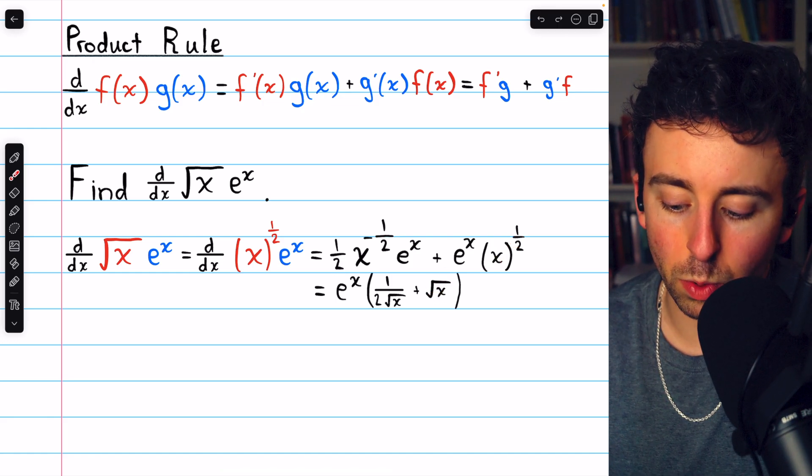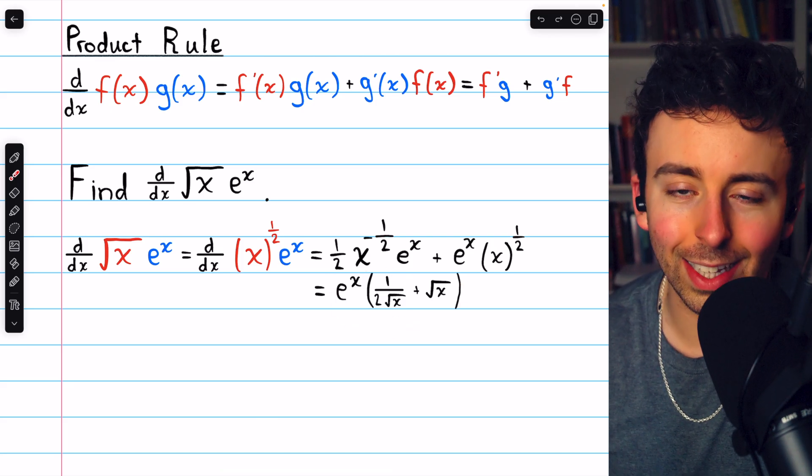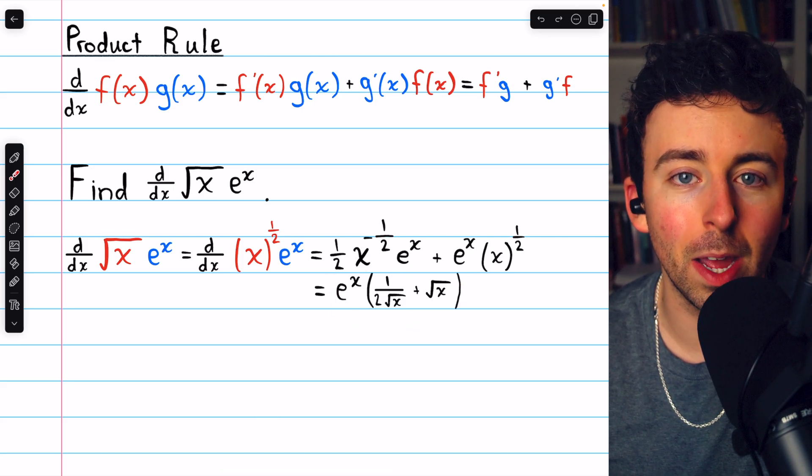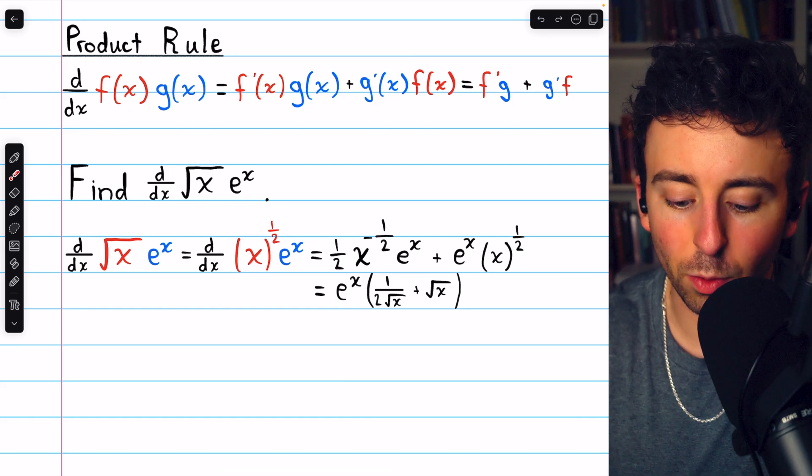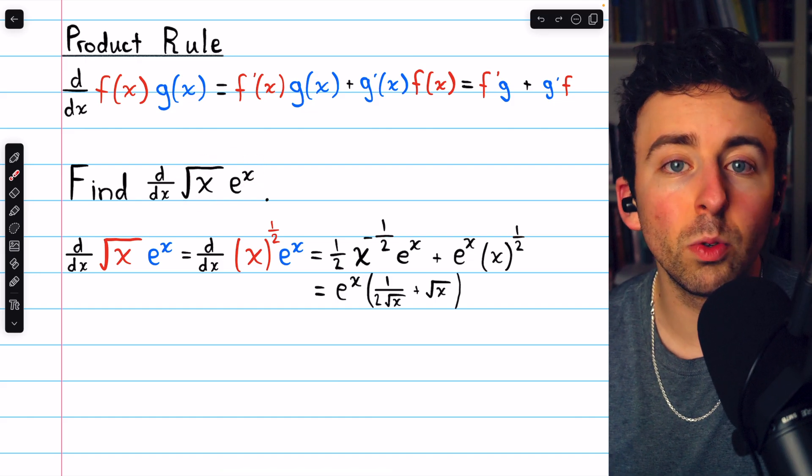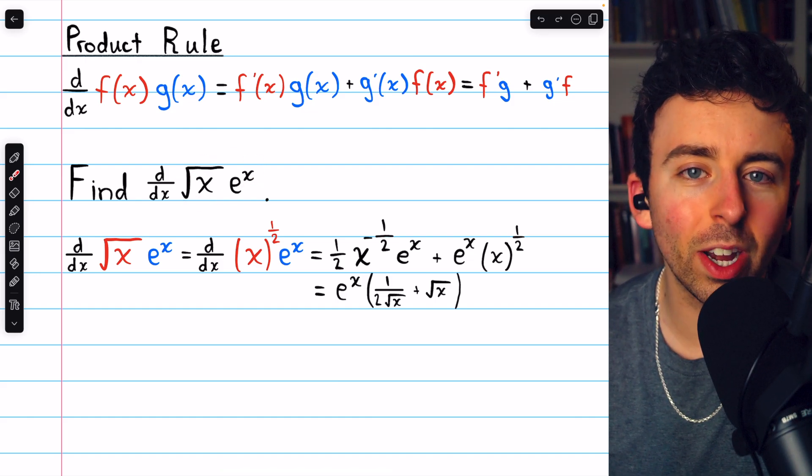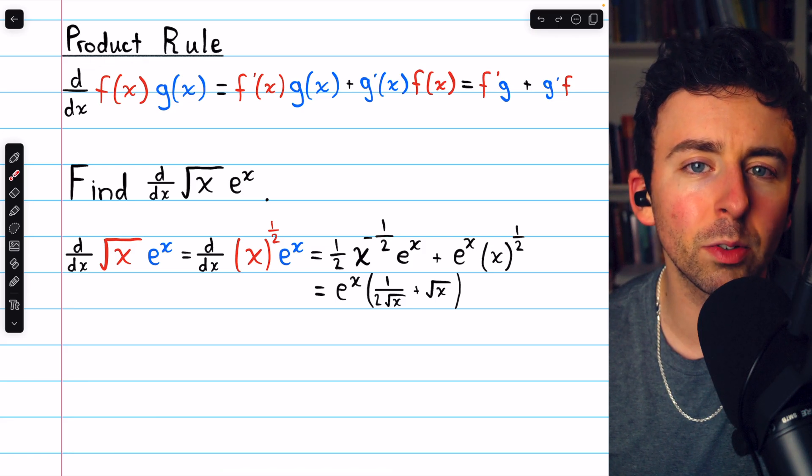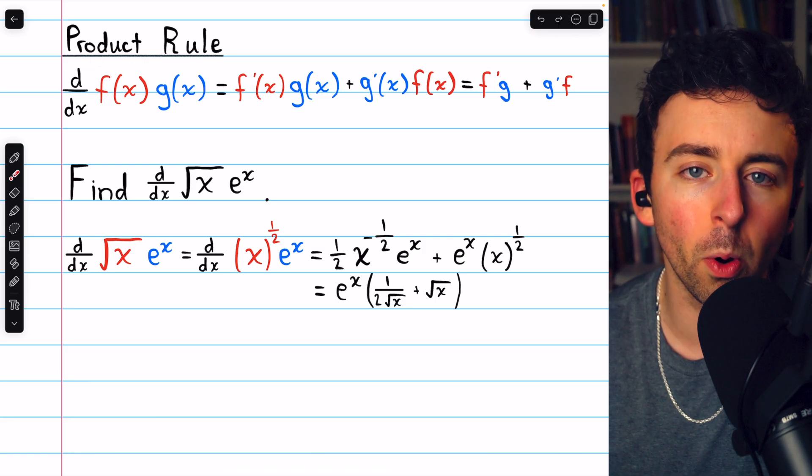Similarly, x to the one half is root x as well, so you could write it like that. Looks a little bit nicer in my opinion. That's it. That's how to take the derivative of the square root of x times e to the x using the product rule. Let me know in the comments if you have any questions, and be sure to check out my Calculus 1 course and Calculus 1 exercises playlists in the description for more.